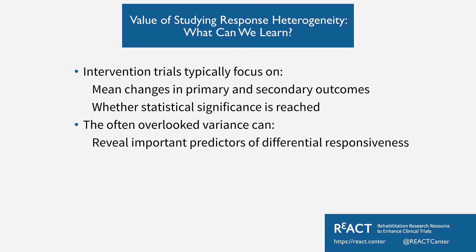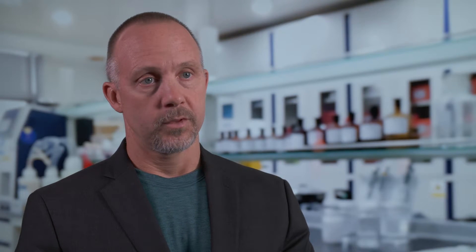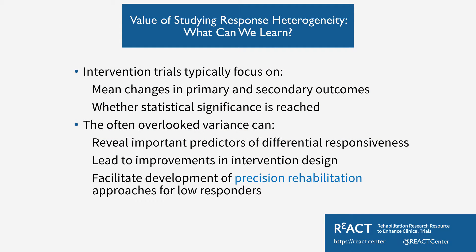What we tend to ignore are those two extremes, which can be quite important scientifically. When we think about the variance or range of responses, it may well be that those extremes — both non-responders and extreme responders — reveal important predictors. Why did they respond differently? Can we learn from that and use that knowledge to improve the next intervention and how we design it? If we have a group that does not respond well, can we develop interventions that may be more effective for them? We would term that precision rehabilitation.